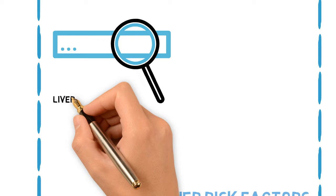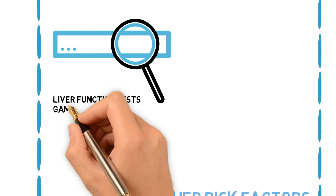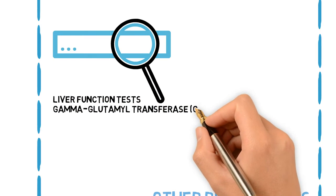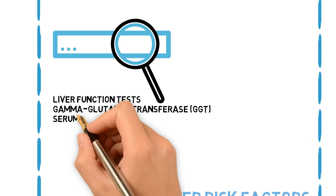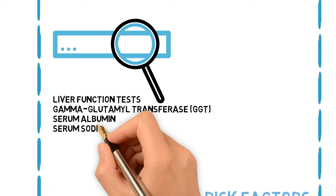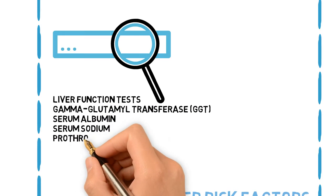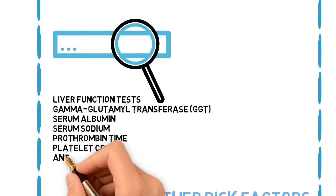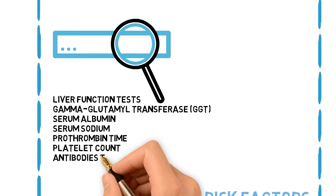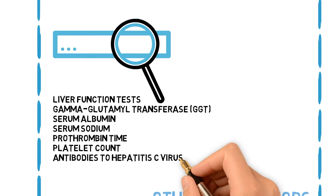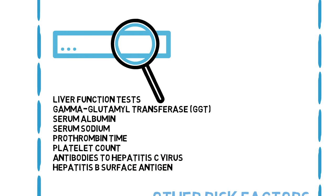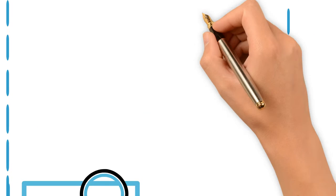Investigations. Liver function tests include gamma-glutamyl transferase (GGT), serum albumin, serum sodium, prothrombin time, and platelet count. Additionally, antibodies to hepatitis C virus and hepatitis B surface antigen should be checked.